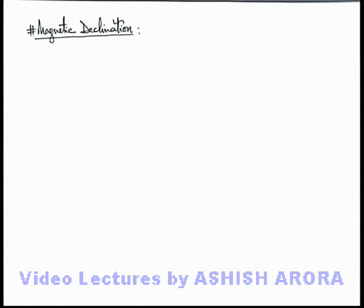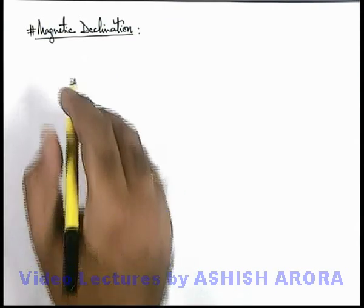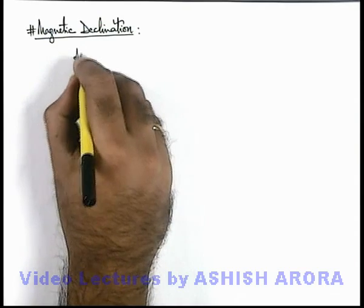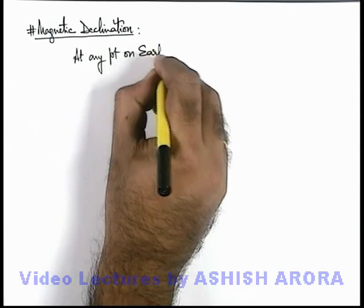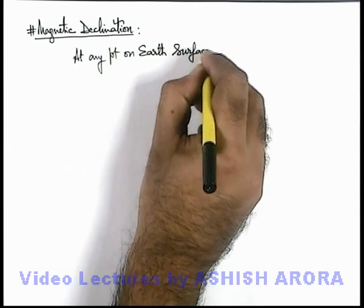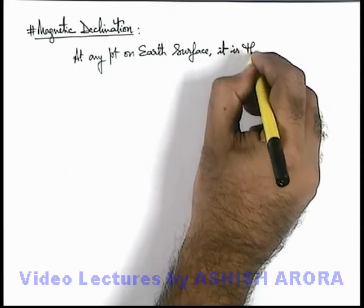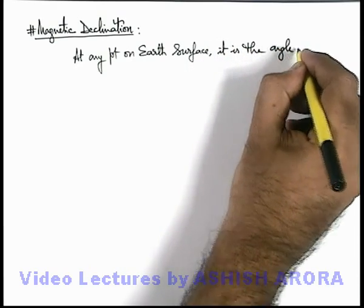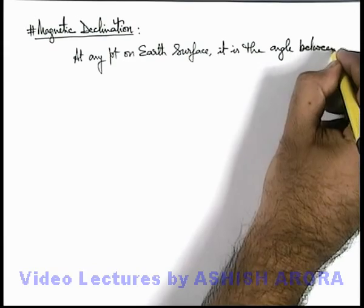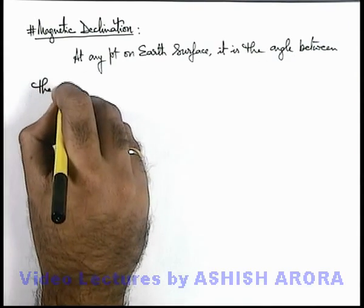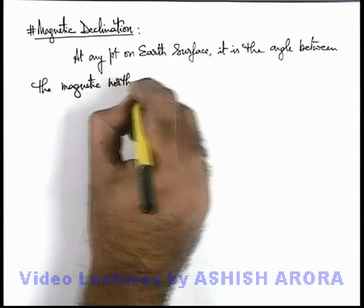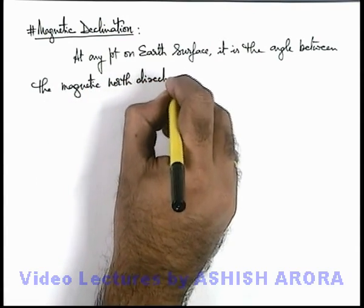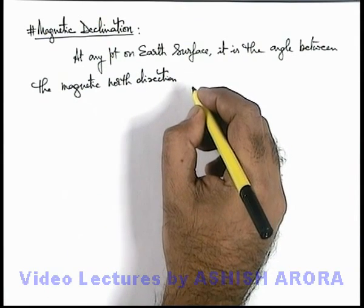Let us study about another important term in terrestrial magnetism — that is magnetic declination. At any point on earth's surface, magnetic declination is the angle between the magnetic north direction — which is the direction in which a compass needle or a suspended magnet points.